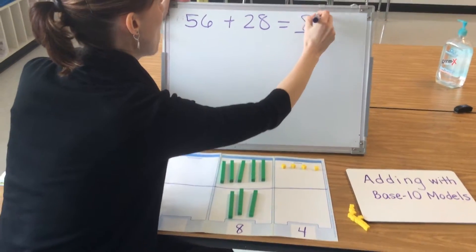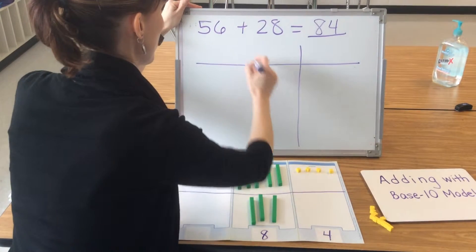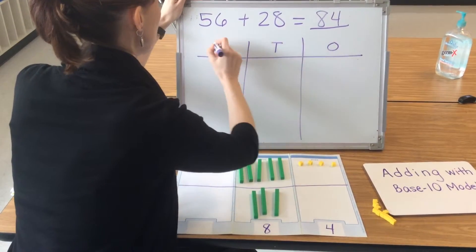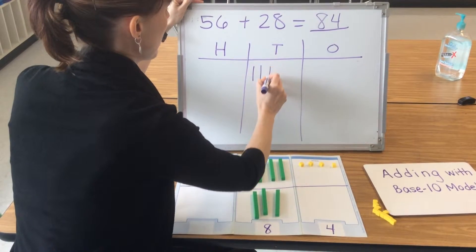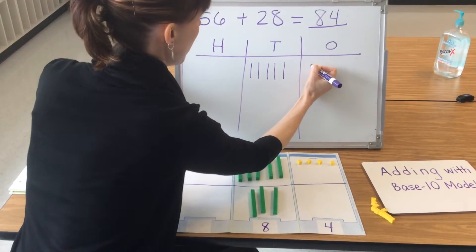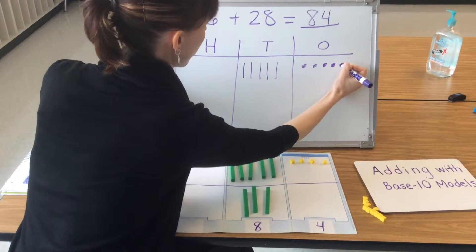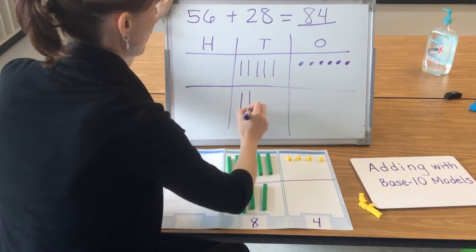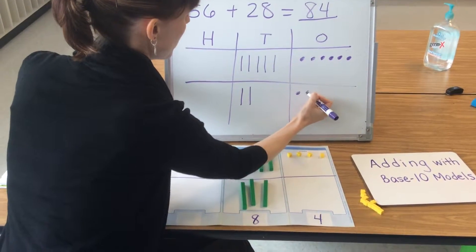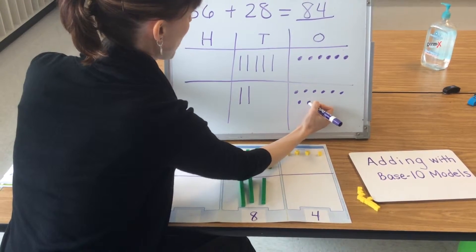Now let's see what that problem would look like with a pictorial model. We make our HTO chart: ones, tens, hundreds. I model 56: 10, 20, 30, 40, 50, 51, 52, 53, 54, 55, 56. I model 28: 10, 20, 21, 22, 23, 24, 25, 26, 27, 28.